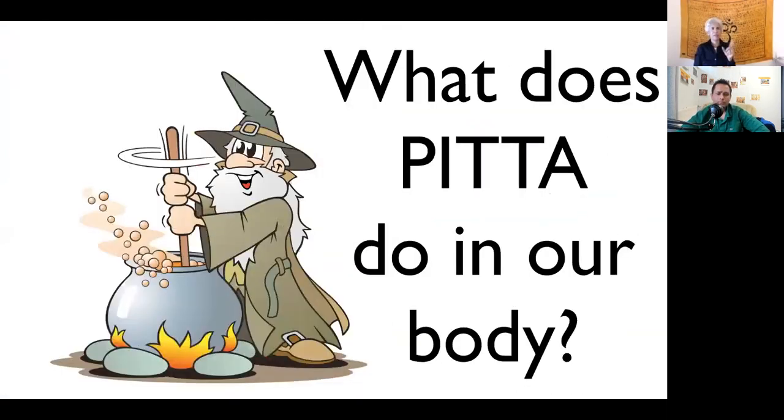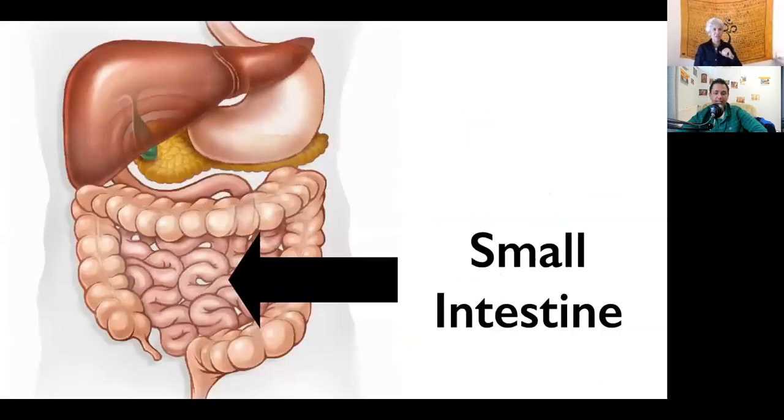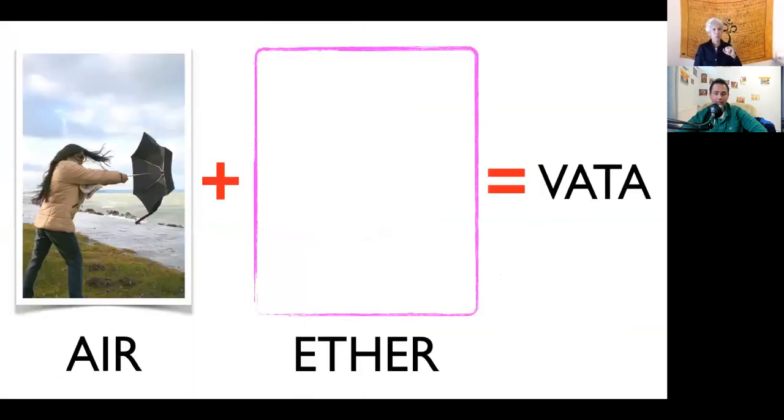Okay, where were we here? I just went through all that. What does pitta do in our body? Pitta resides in the small intestine. Here we are - come to vata. Vata is the air and the ether element. Air and space come together. Can you imagine how drying? Can you imagine the food that's vata? Nobody wants to eat vata food.